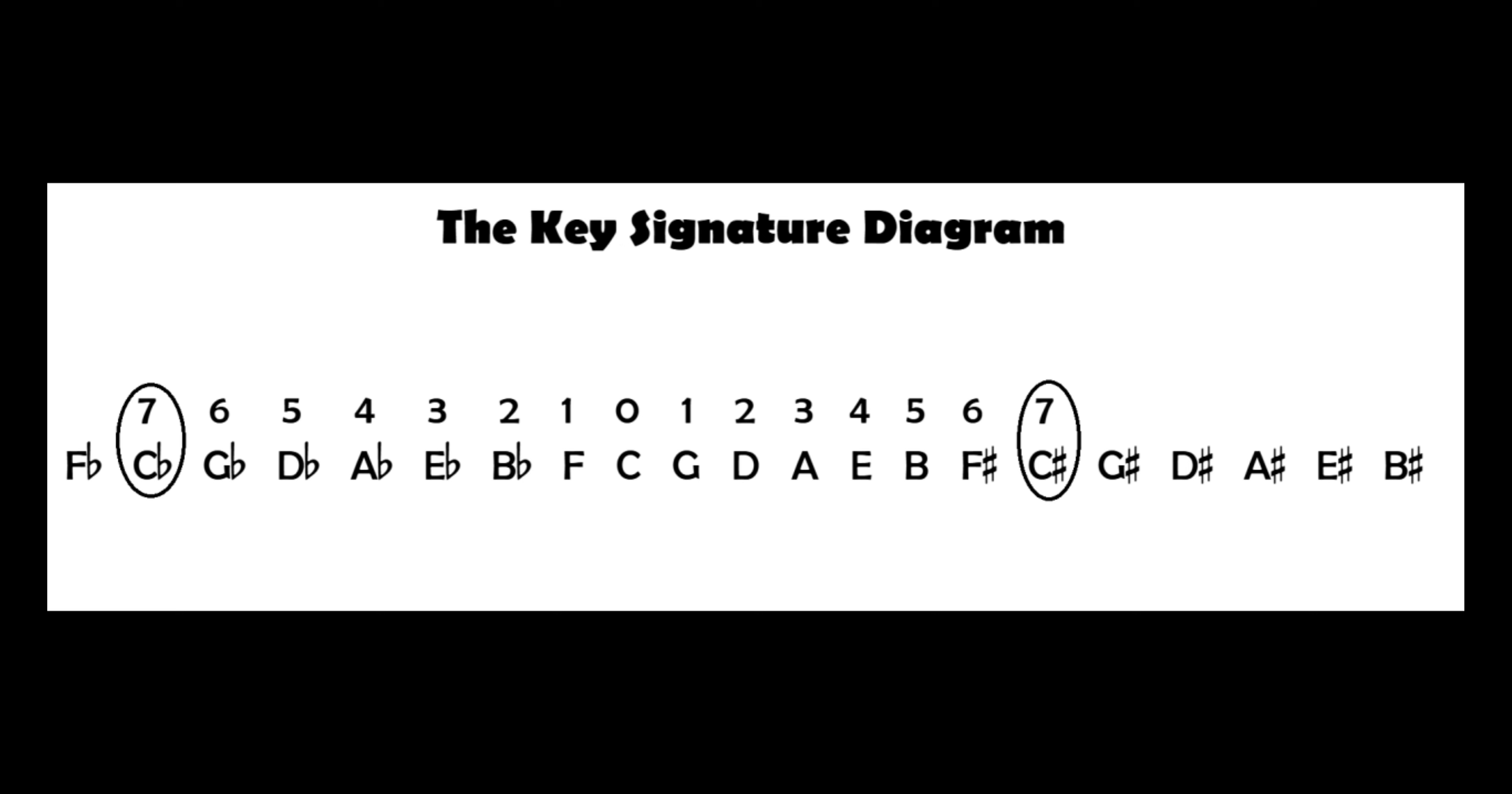A minor also has no sharps or flats, so write a 0 underneath A, and write 1 to 7 going both ways from the 0 again. Check that both the 7's are underneath A's.